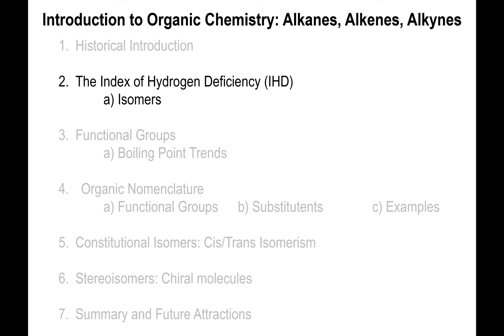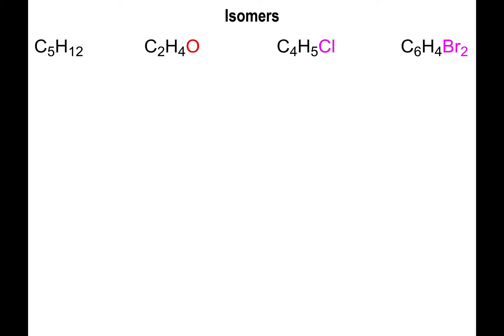Now that we've talked about how to calculate the index of hydrogen deficiency from the molecular formula of the hydrocarbon, let's see how we use that information to draw as many possibilities for the structure of the compound, which we call isomers. We're going to look at four examples individually.